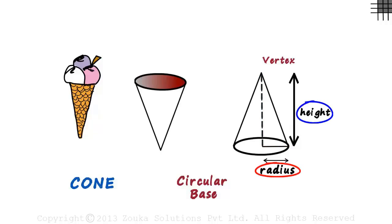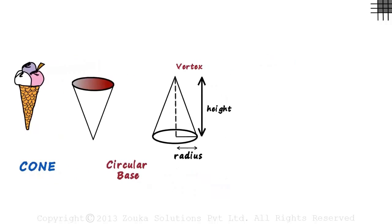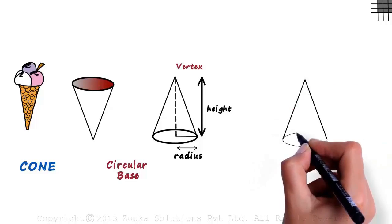So if both these parameters are given, we will get a unique cone. What does this mean? Say you are asked to draw a cone which has the radius of its circular base five centimeters. So you draw it like this.